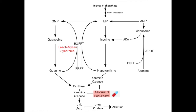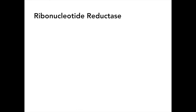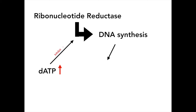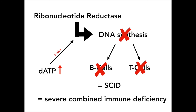What happens if ADA is deficient? The only way that adenosine can be rid of by the body is through the pathway that utilizes ADA. If ADA is absent, then adenosine will be converted into deoxy ATP, and levels of deoxy ATP will be high. Ribonucleotide reductase is an enzyme that controls DNA synthesis, and high levels of deoxy ATP will inhibit it. With ribonucleotide reductase inhibited, highly differentiated and rapidly dividing cells such as lymphocytes will not be able to synthesize DNA, thus leaving the body immunodeficient. This is one of the major causes of autosomal recessive severe combined immunodeficiency (SCID).